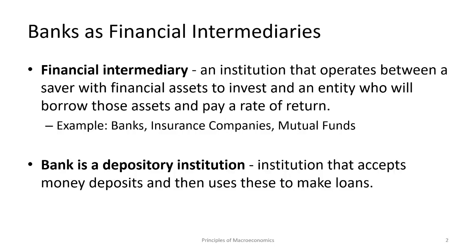The first important definition is financial intermediary — it's an institution that operates between a saver with financial assets to invest and an entity who will borrow those assets and pay a rate of return. Examples include banks, insurance companies, and mutual funds. So financial intermediaries are institutions that facilitate this process.